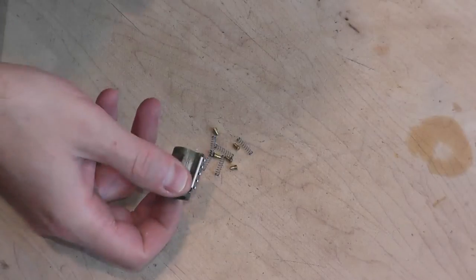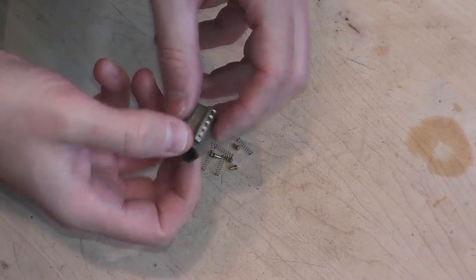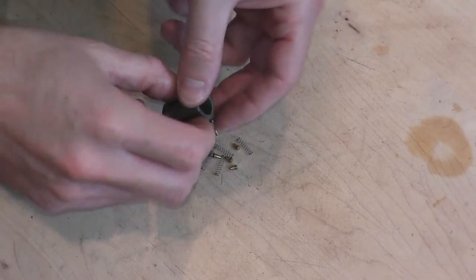So you're rekeying a lock and all the springs and pins come out of the cylinder housing. So the question is how do you reinstall everything?